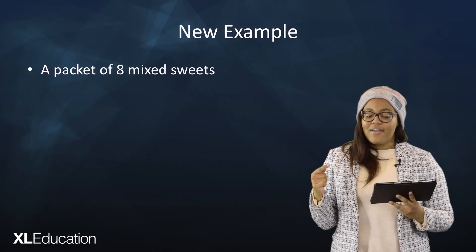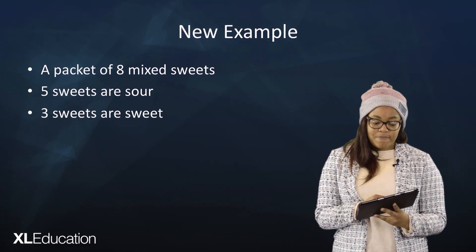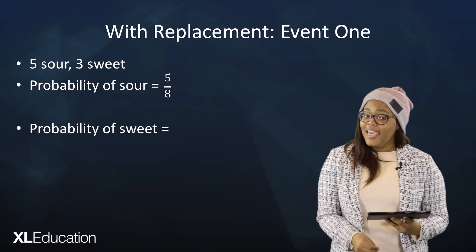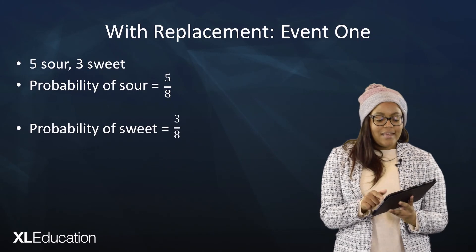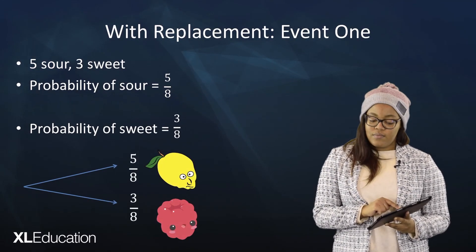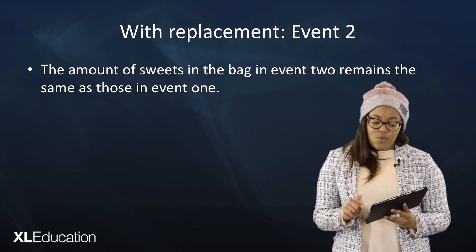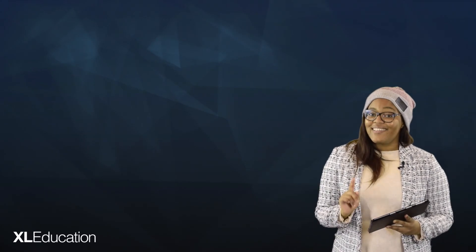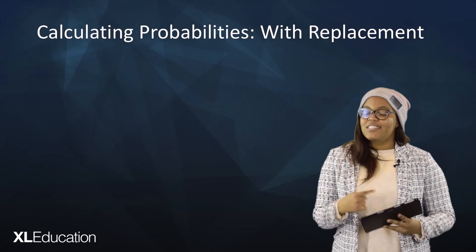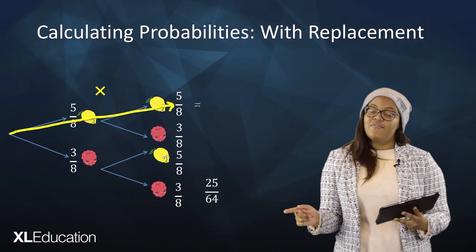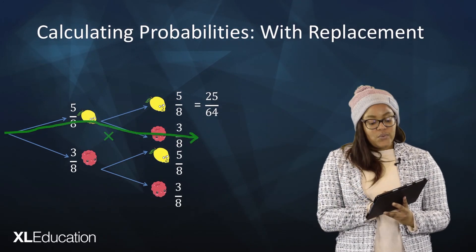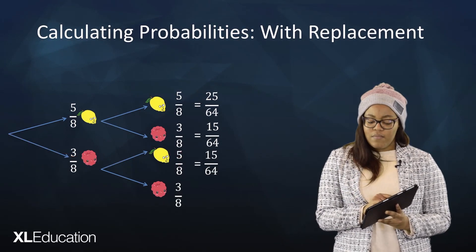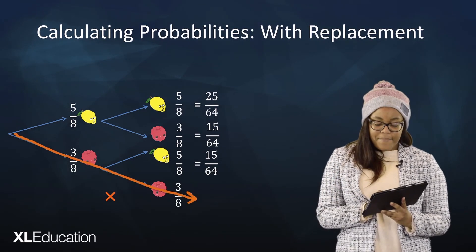Let's say you have a bag of eight mixed sweets — five sour sweets and three sweet ones. The probability of getting a sour sweet is five out of eight and a sweet sweet is three out of eight. In event two with replacement, the amount of sweets in the bag remains the same. So the probability of getting a sour and a sour is 25 out of 64, a sour and a sweet is 15 out of 64, a sweet and a sour is 15 out of 64, and a sweet and a sweet is 9 out of 64.